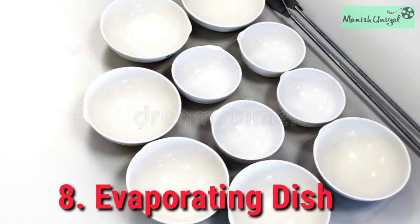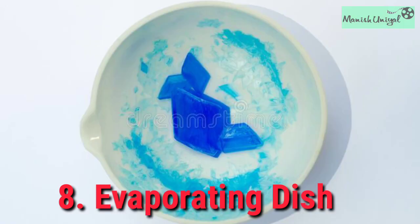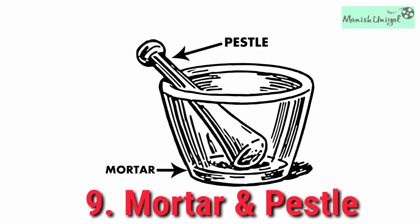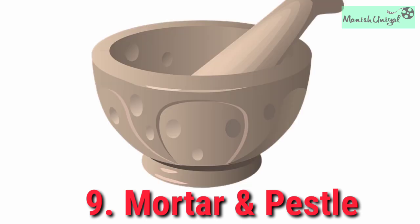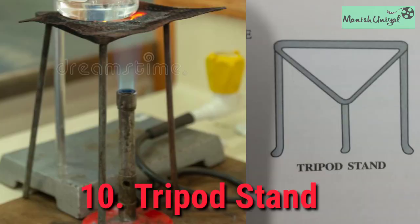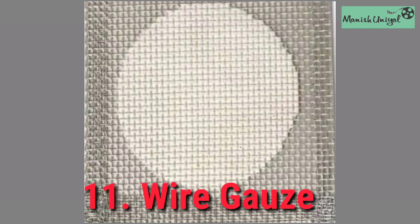Evaporating dish: a bowl-shaped container made of porcelain, used for evaporating solutions or liquids. Number nine: mortar and pestle — a container made of porcelain, used to grind and crush solid substances into a powder. Tripod stand: a stand made of iron, used to support apparatus during experiments. Wire gauge: made of meshed iron wire with a thin asbestos sheet fixed at its centre, used to keep glass apparatus on it while heating is in progress and for uniform distribution of heat.